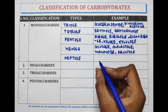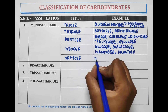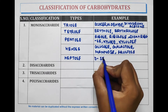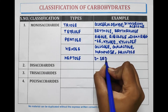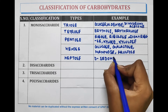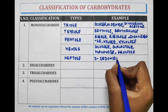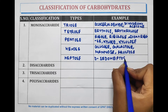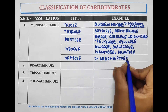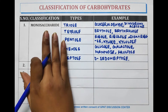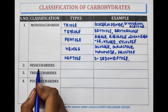The example of heptose is sedoheptulose. These were the examples and types of monosaccharides.